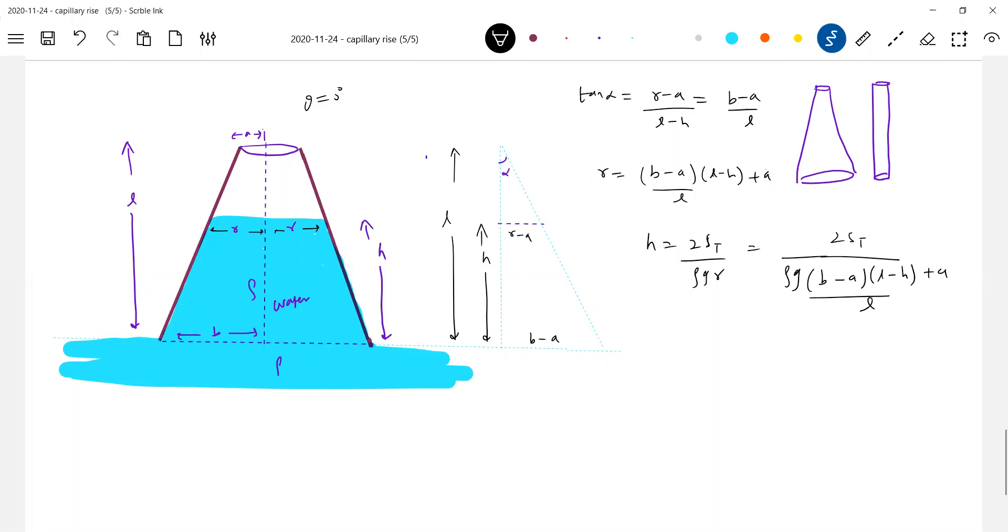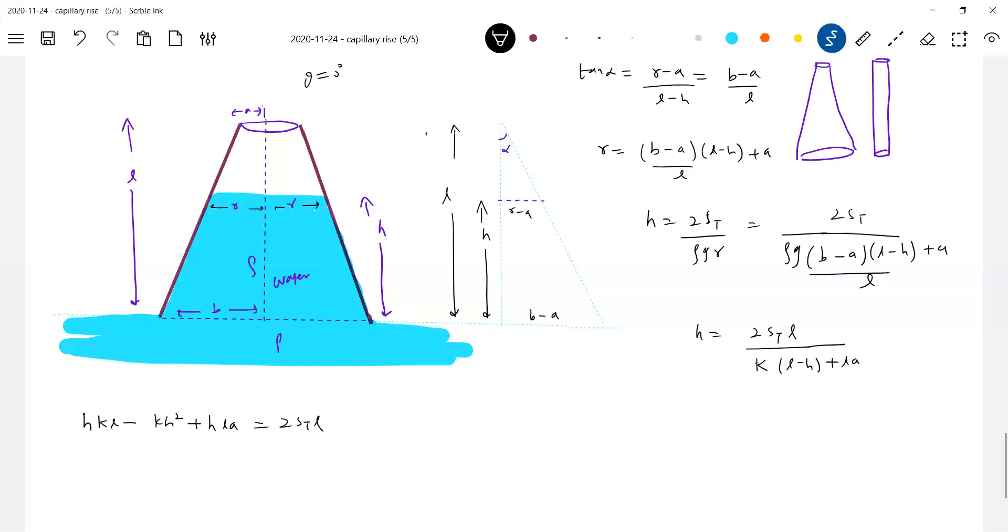Rho g B minus, rho g B minus A L, that everything you can call some constant, so L minus H is there. So this is not our answer, we have to solve for H. If you get a conical capillary tube, there's a mass will be involved of this kind. So this will be further simplification: H is equal to 2 S T L by rho g, everything I'll call say some K, L minus H plus L A. So this should become equal to H K L minus K H square plus H L A is equal to 2 S T L.